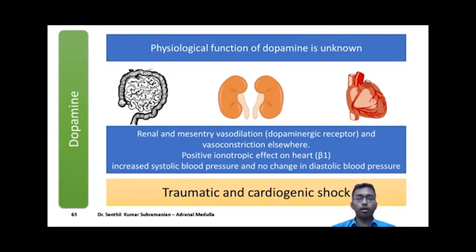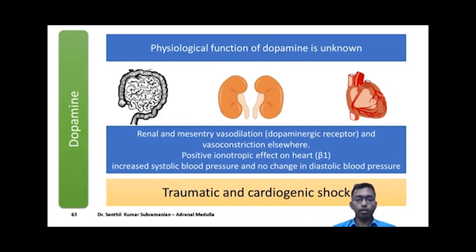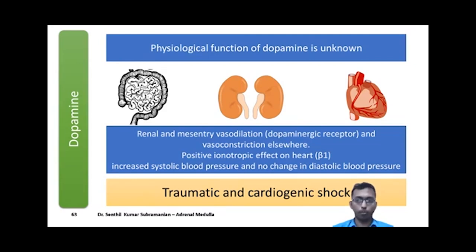Moving to dopamine: the amount of dopamine secreted from the adrenal medulla is very small, and its physiological function is unknown. Pharmacologically, dopamine infusion causes vasodilation in the renal and mesenteric circulations via dopaminergic receptors and vasoconstriction elsewhere. It increases force of cardiac contraction via beta-1 receptors. The net effect is an increase in systolic blood pressure with no change in diastolic blood pressure. These properties are used in traumatic and cardiogenic shock, maintaining blood pressure while preserving blood supply to the kidney and mesentery.